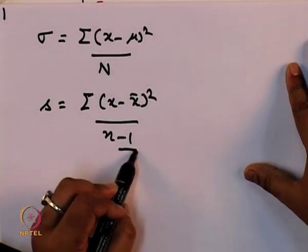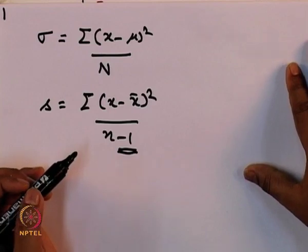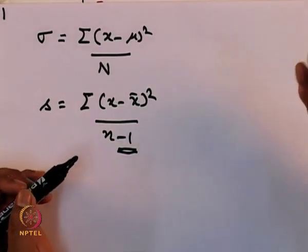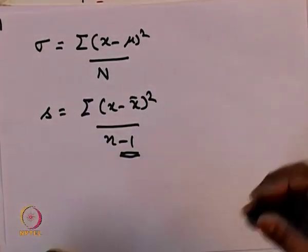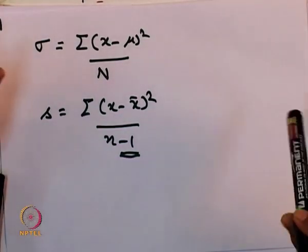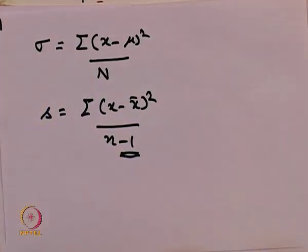Note this minus 1. When you are doing a sample, dividing by N minus 1 gives you a better estimate of the standard deviation of the population.